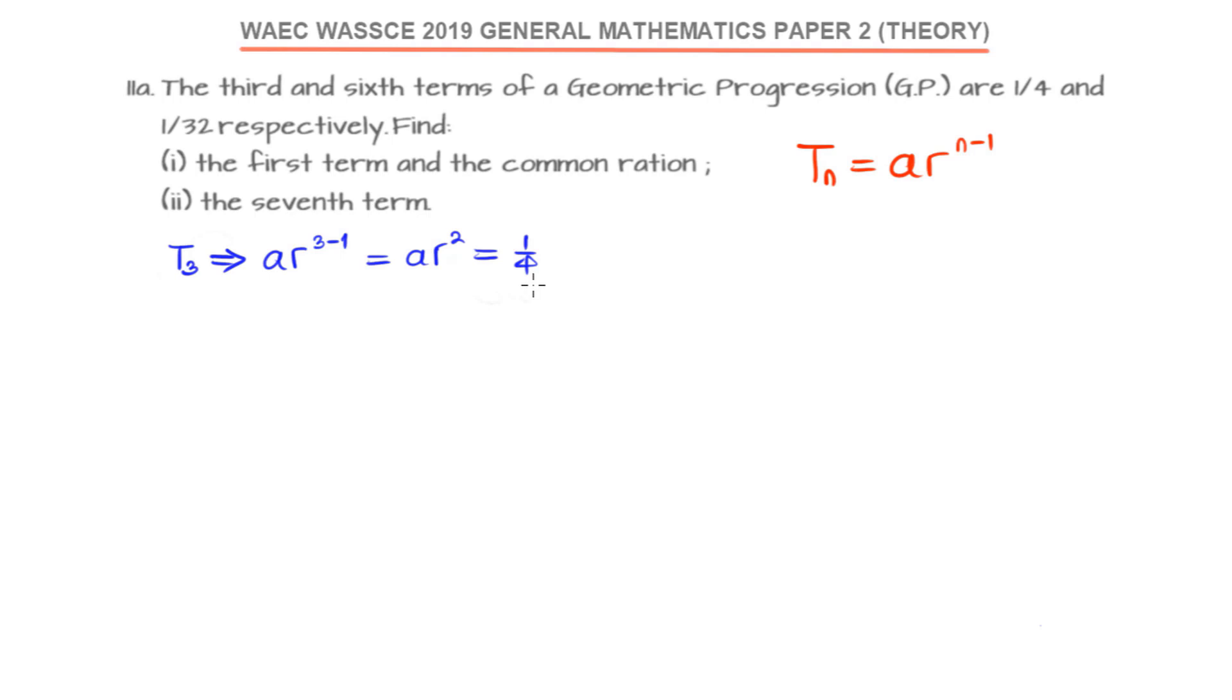We can call this equation 1. We also continue with the sixth term. We are told that the sixth term is A times R raised to power 6 minus 1, which is 5. We are given that to be 1/32. If we call this equation 2, we can look for a way to solve these two equations. The best bet for us is to divide equation 2 by 1.